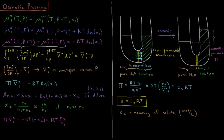We're assuming that molar volume is constant over the moderate pressure change from atmospheric to the osmotic pressure. So the osmotic pressure times the molar volume of the pure solvent (water in this case) equals minus RT times the natural log of the activity of our water in solution.